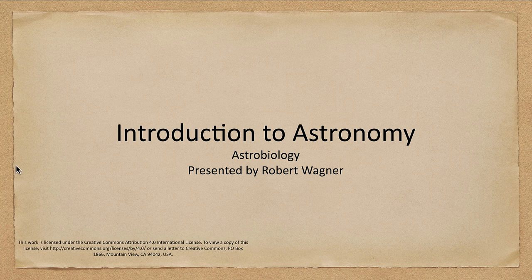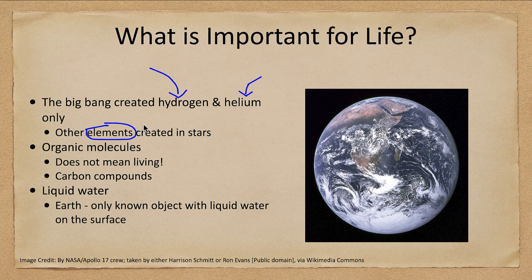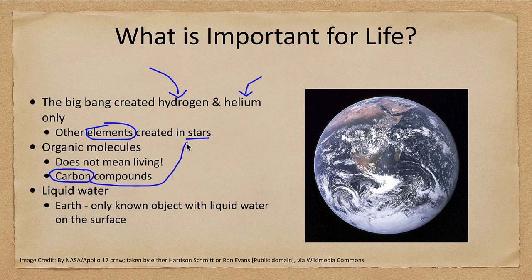What is important for life? Some things that are important are specific elements that are needed. The Big Bang gave us two elements — hydrogen and helium — and that's it. Those were the only elements created in the Big Bang. Other elements were created in stars. We also need organic molecules. Organic does not mean living; organic molecules are molecules based on carbon. We have to have had stars first to produce the carbon through nuclear fusion and then expel it back out into space.